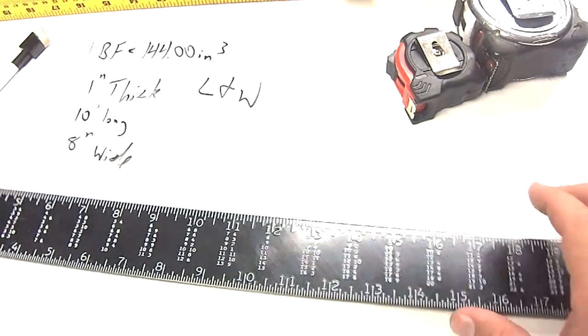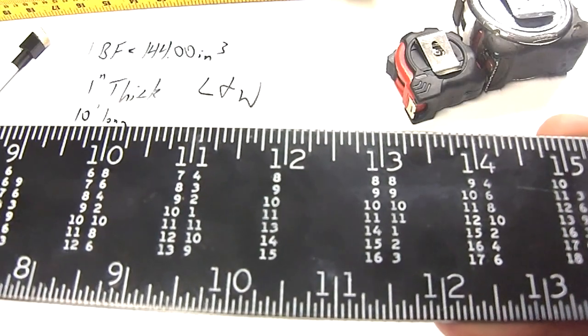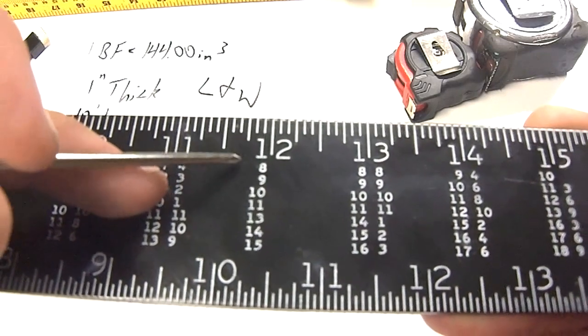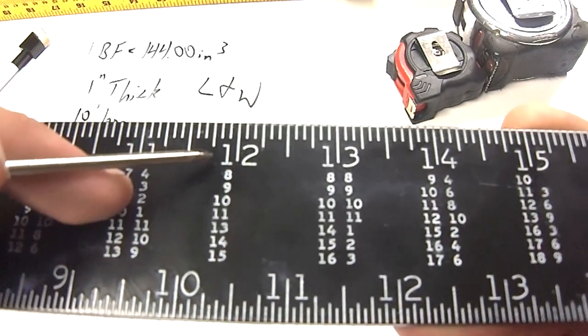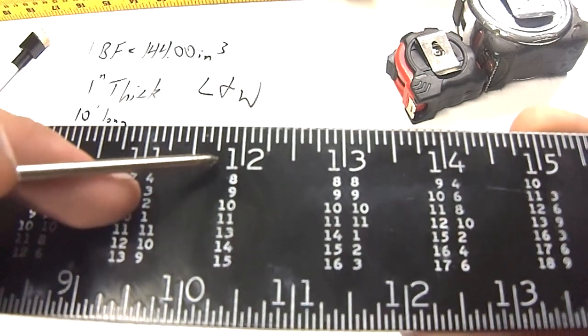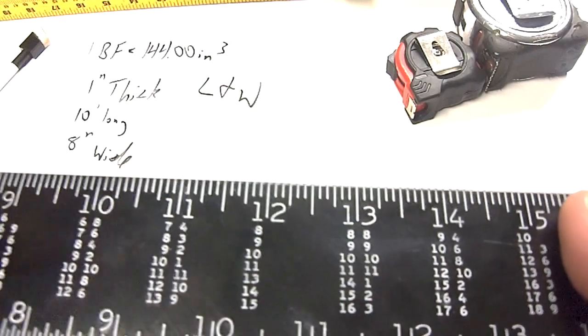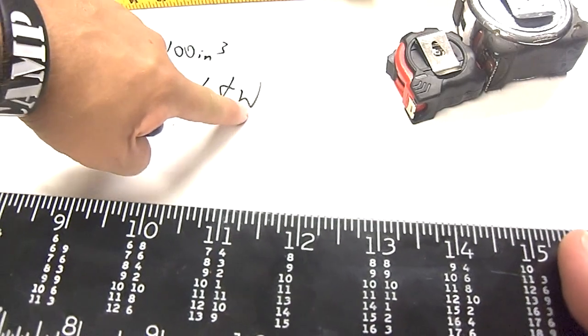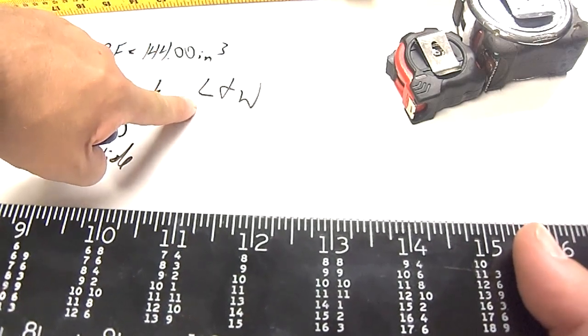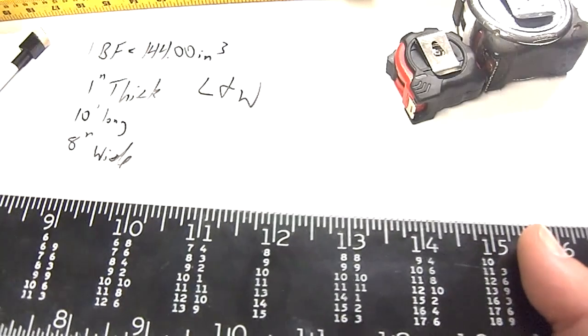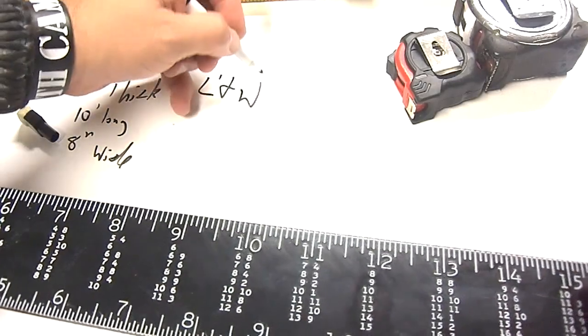Now, your go-to every single time is going to be right here at your 12. That is the beginning point of trying to determine this. Every single time, you start off at the 12. When you're figuring this out, you always start off with length and then the width. The length is always going to be in feet. The width is always going to be in inches.